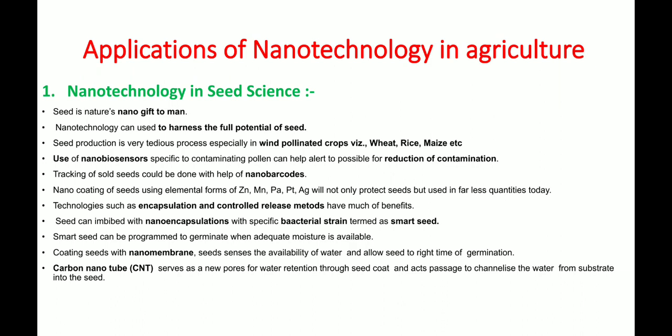Nanobiosensors specific to contaminating pollutants can help alert and reduce contamination. Tracking of seed sheets could be done with nano barcodes coded in nanotechnology to track seed batches from one place to another. Nano coating of seeds using nanometals like zinc, manganese, palladium, platinum, silver, and gold can protect the seed and reduce the quantity of seed used. Encapsulation and controlled release methods also offer benefits in seed science.